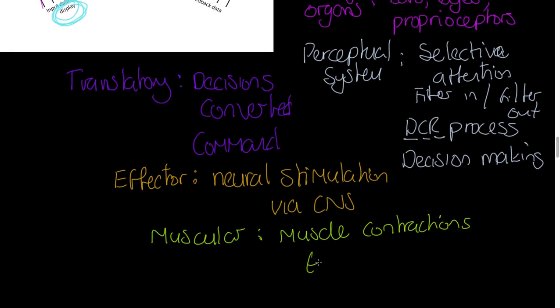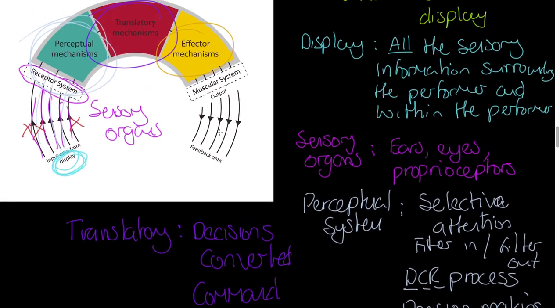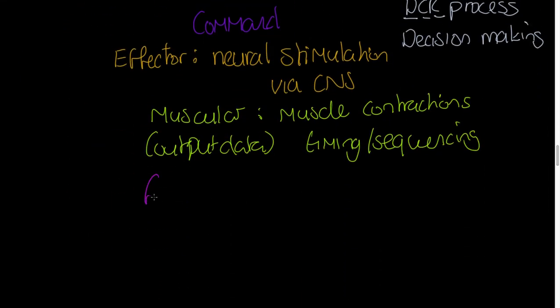The example I gave was the hand or maybe the arm abducting at the shoulder, elbow extension and the flexion of the fingers or the extension of the fingers to make sure that a catch is possible. So it's muscle contractions. But it's also what we'd call timing, sequencing, because those things have to also be done in the right order. So that's implemented by the muscular system. And that produces our output data, our output data, because the output is movement.